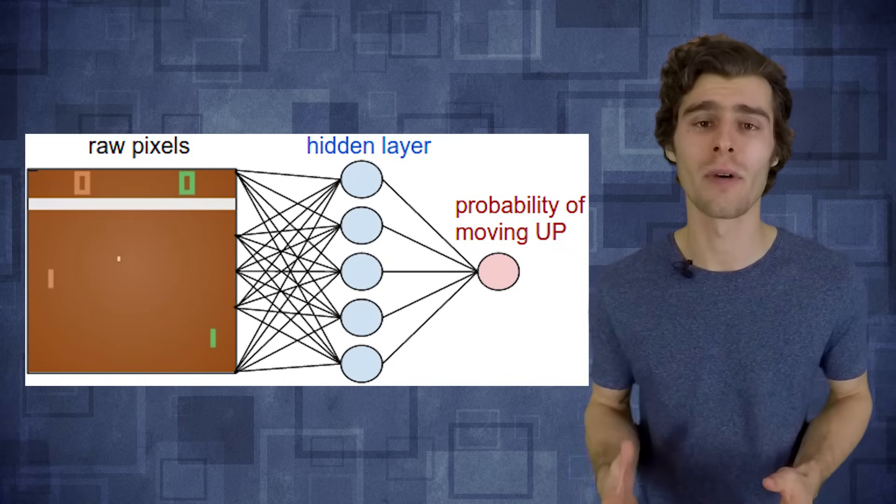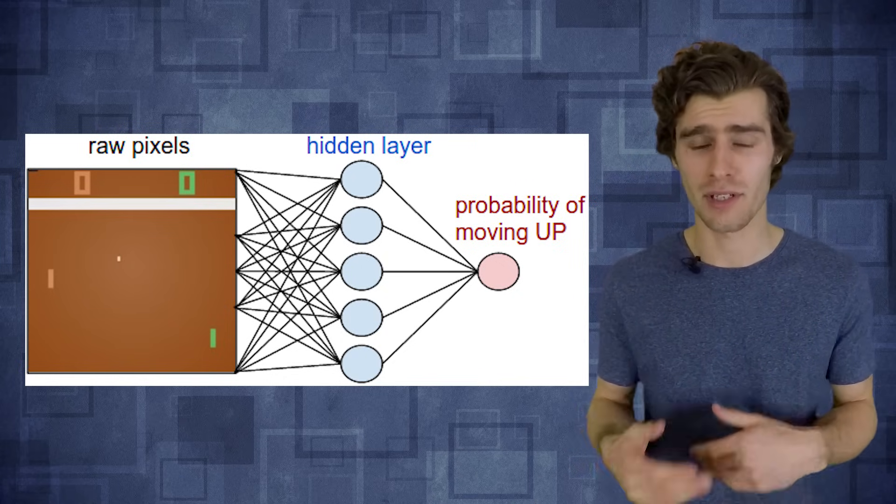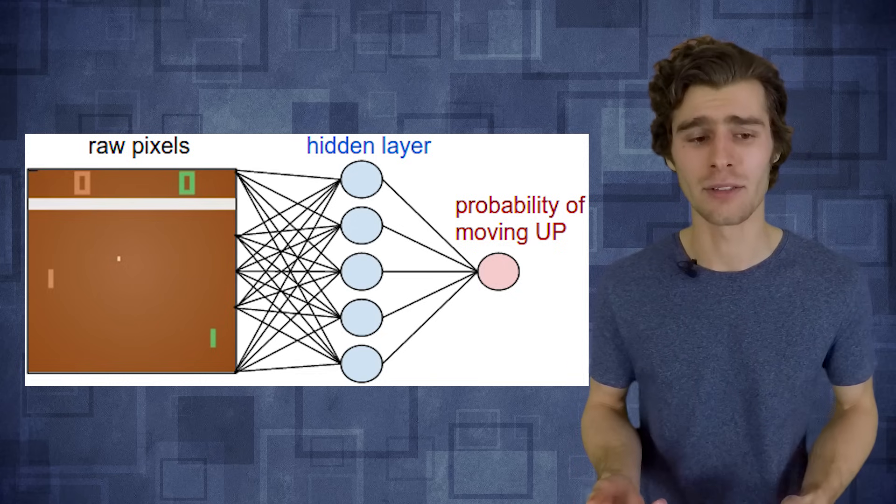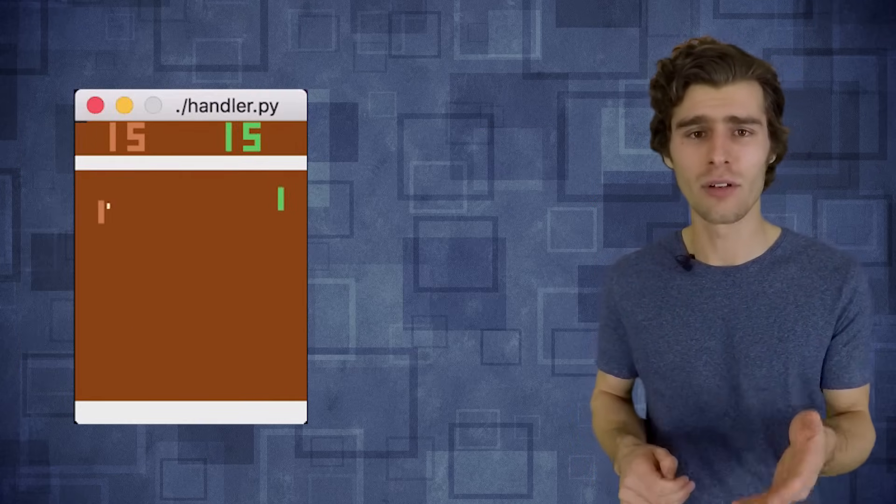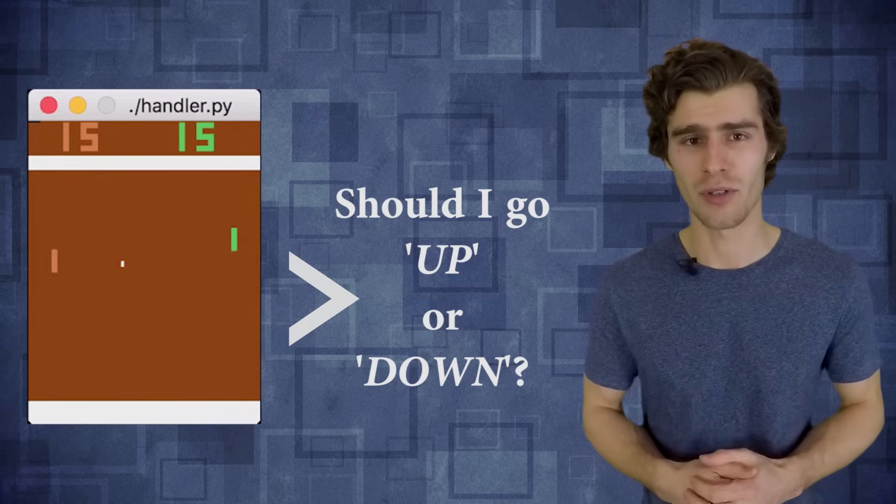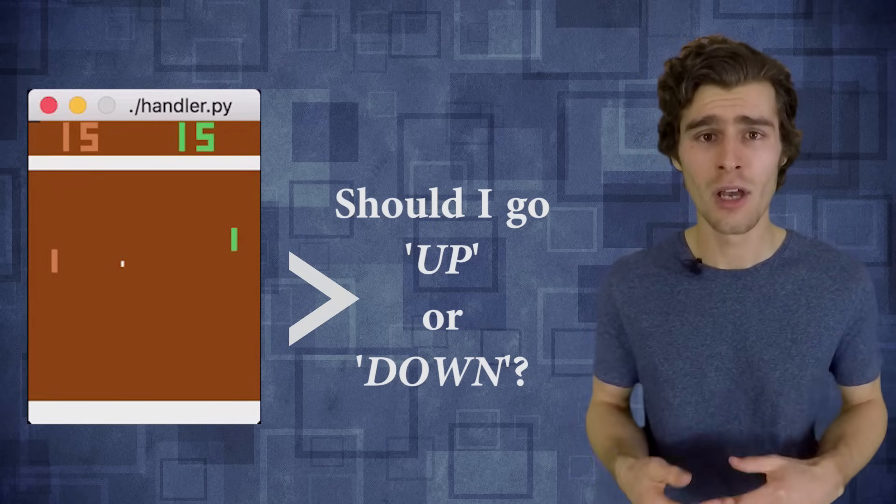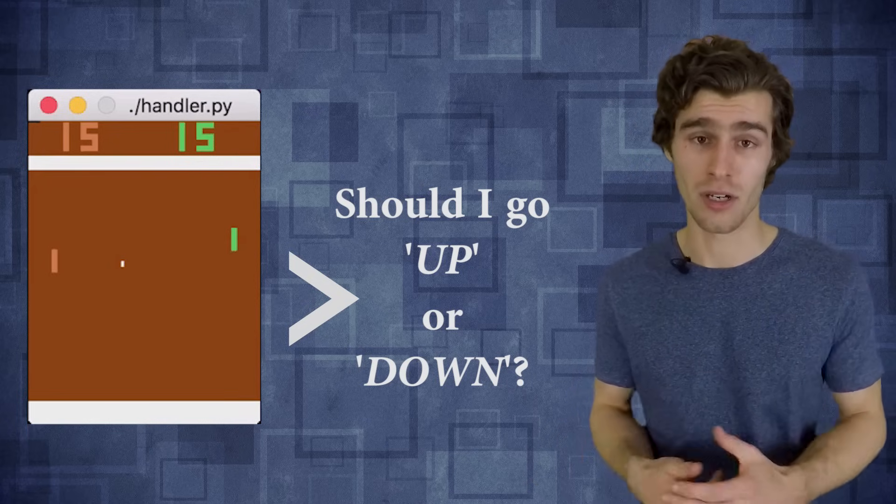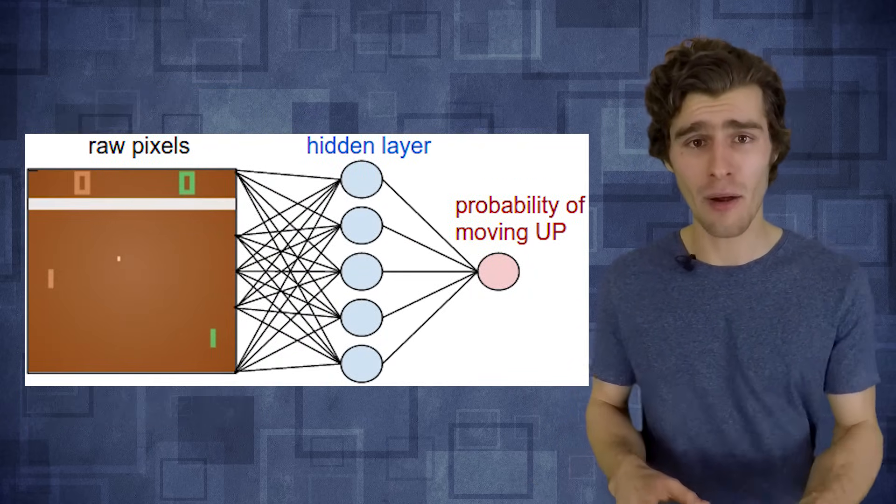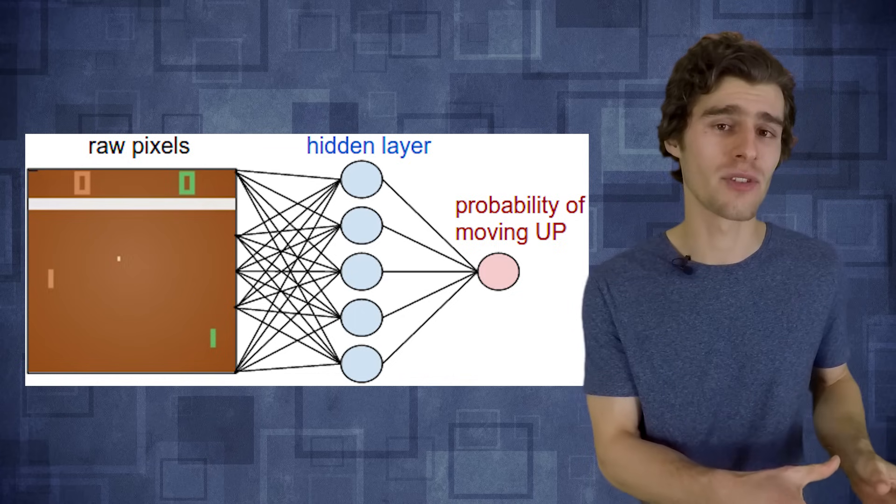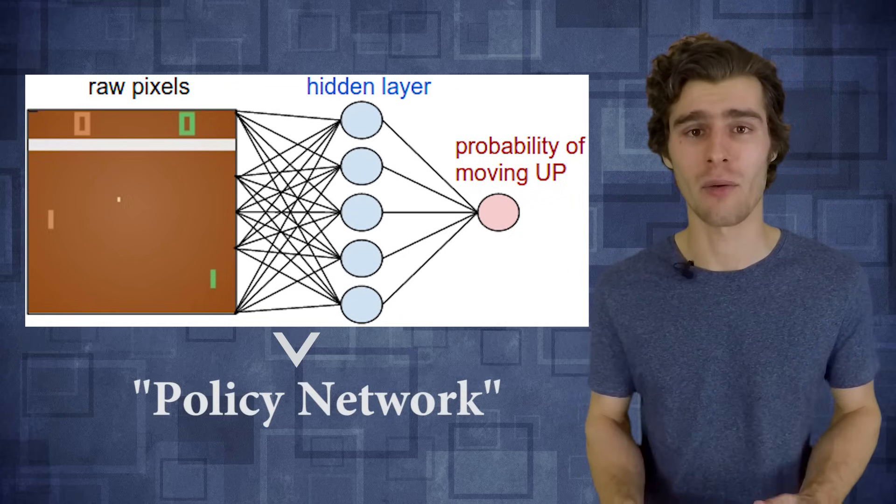So the framework in reinforcement learning is actually surprisingly similar to the normal framework in supervised learning. So we still have an input frame, we run it through some neural network model, and the network produces an output action, either up or down. But the only difference here is that now we don't actually know the target label. So we don't know in any situation whether we should have gone up or down, because we don't have a dataset to train on. And in reinforcement learning, the network that transforms input frames to output actions is called the policy network.